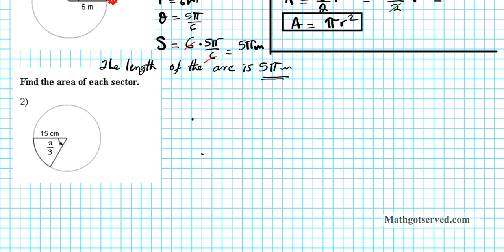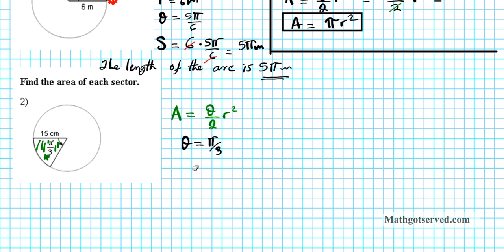Let's shift our attention to question number two — we are asked to find the area of the sector. Geometrically, the area of the sector is basically this region enclosed by these two radii, separated by an angle of pi over three radians. The formula for the area of a sector is given by theta over two, r squared. So all we need is theta and r: theta is pi over three and the radius r is equal to 15.